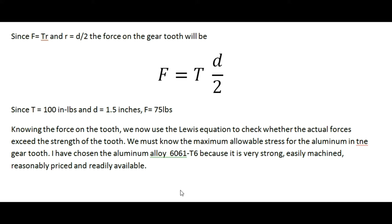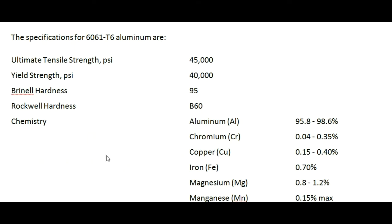Since we know the force on the tooth, we can now use the Lewis equation to check whether the actual forces exceed the strength of the tooth. To do that, we have to know the maximum allowable stress for aluminum in the gear tooth. I've chosen the aluminum alloy 6061-T6 because it's very strong, easily machined, reasonably priced, and readily available. The specifications for 6061-T6 show that the ultimate tensile strength of this material is 45,000 psi, which gives us a yield strength of about 40,000 psi.